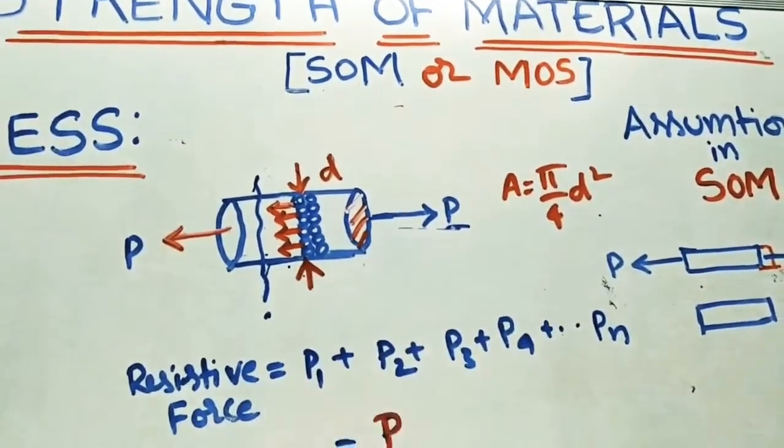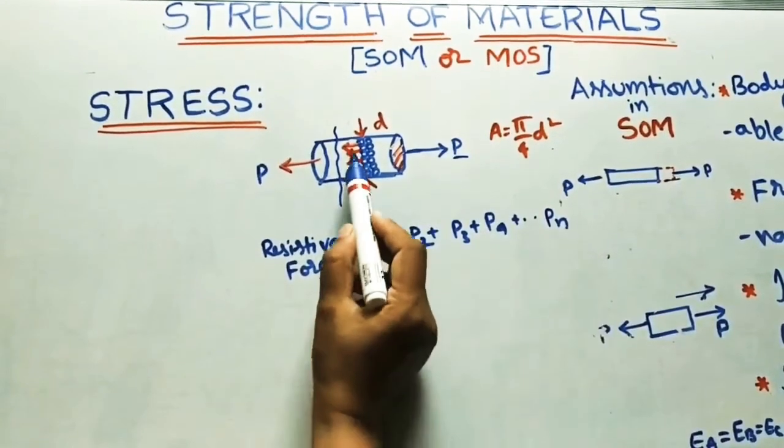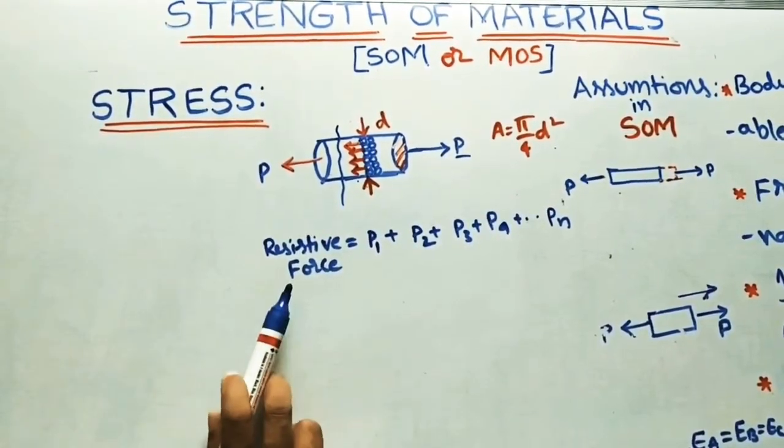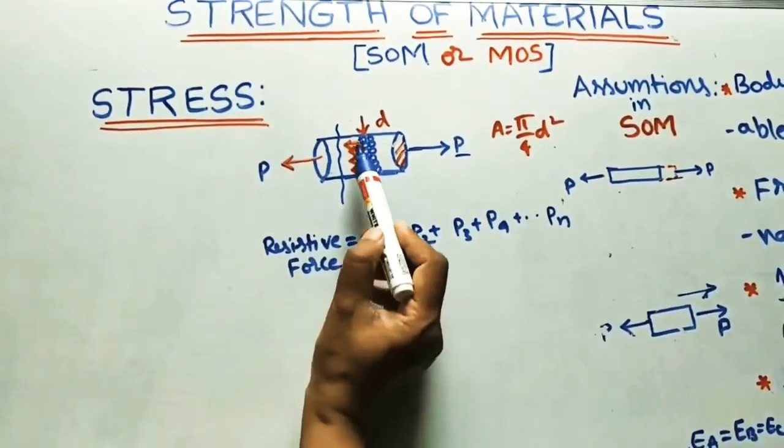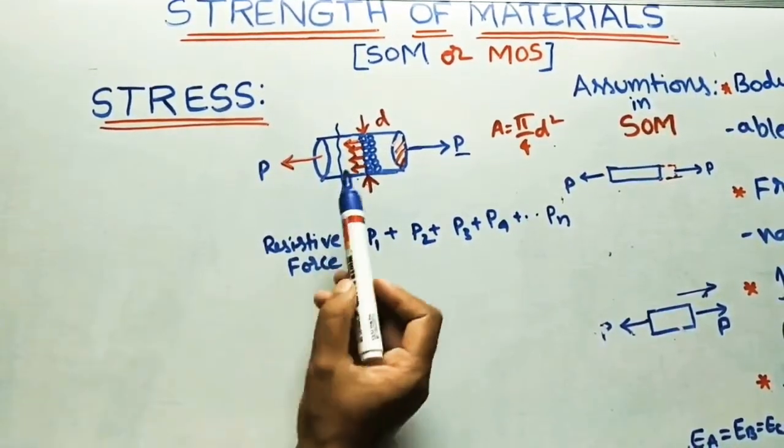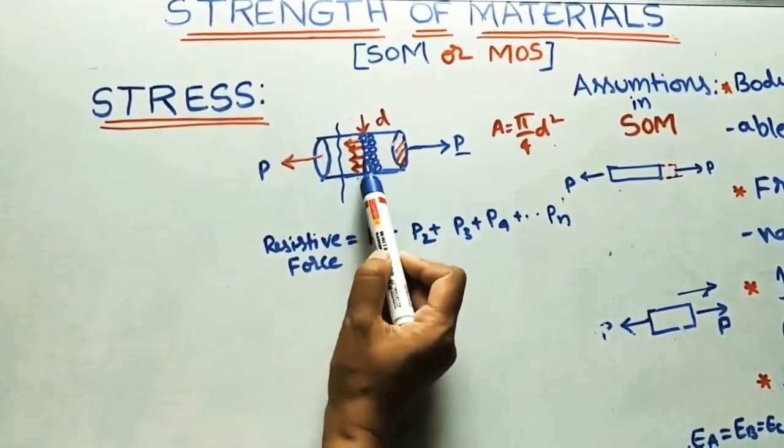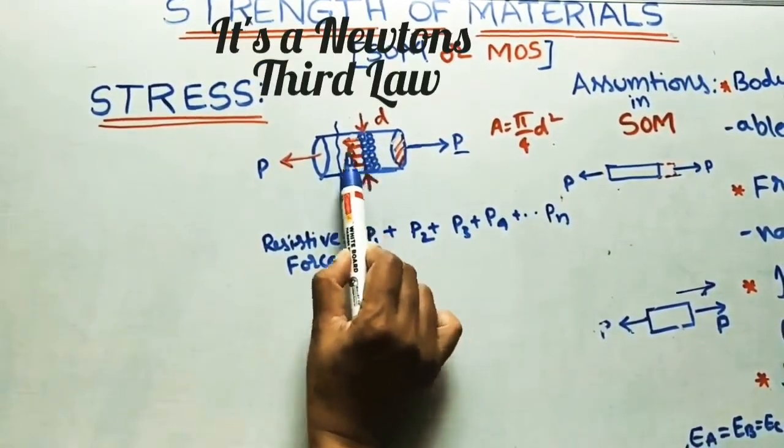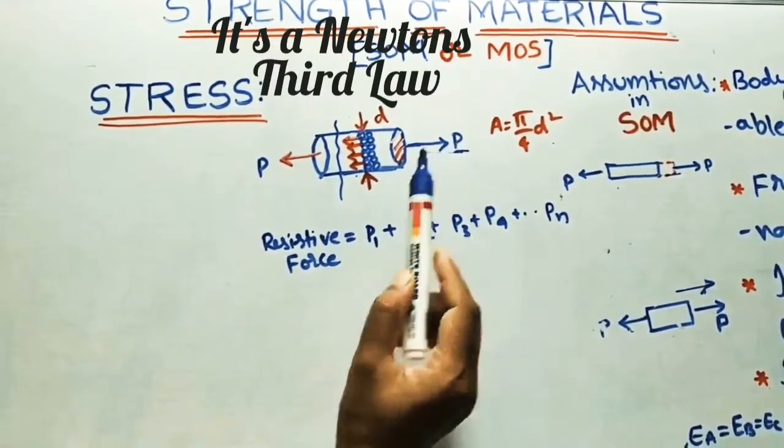So this is our main part now. Sum of all these resistance forces is called total resistive force. Is there any method of calculating internal forces? So it is difficult to calculate each and every molecule force inside the body. So that is why for equilibrium, whatever sum of all resistance forces, it is equal to the applied force.